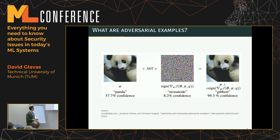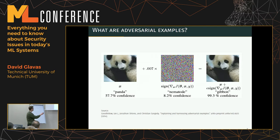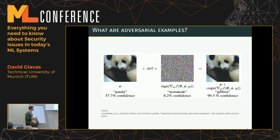In this example the authors showed an image of a panda. We humans look at it and it's obviously a panda. The model is only 57% confident it's a panda. After adding the crafted noise — the image still looks like a panda to us — but the model becomes almost completely certain it's a gibbon, a type of ape, which makes no sense.